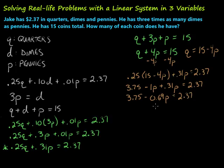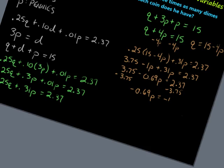We're making our way. Then we want to get that P by itself. Look at that. We've got one equation with one variable and we can solve that for P. So minus 3.75, minus 3.75, and that gives us negative 0.69P equals negative 1.38.